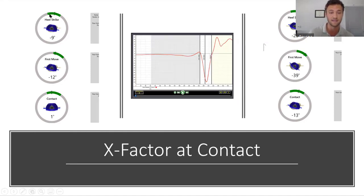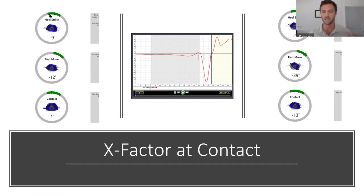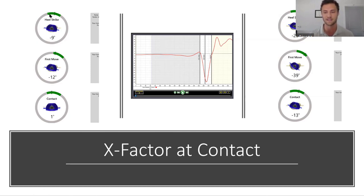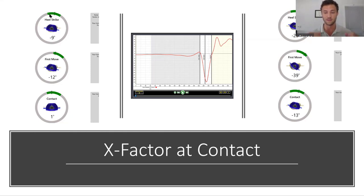X-Factor at contact is super important to understand. The player may be creating a ton of X-Factor at first move, but are they bringing it back together at contact? On the left side of the screen, this player gets within one degree of pelvis and torso synced up at contact — that's what we're looking for with really elite hitters. We want to be within five degrees; for youth and developing players, maybe 10 degrees at contact. If we continue to work towards pelvis and torso syncing up at contact, that's going to be super important for output and energy transfer into the bat and ball.